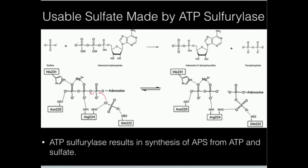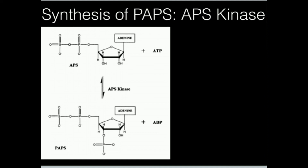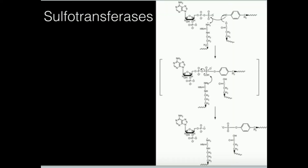Hopefully this gave you some intuition on how we assimilate sulfate and use it to make sulfate transfers. Remember, PAPS is the molecule we're going to use for all sulfate transfers in humans. Join us in the next video where we talk about some specific sulfotransferase reactions. Thank you for watching.